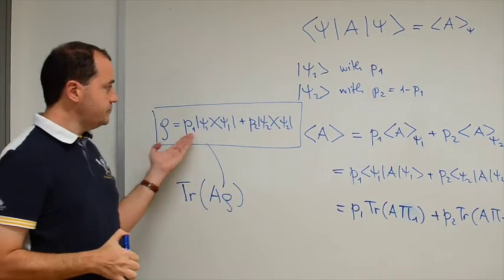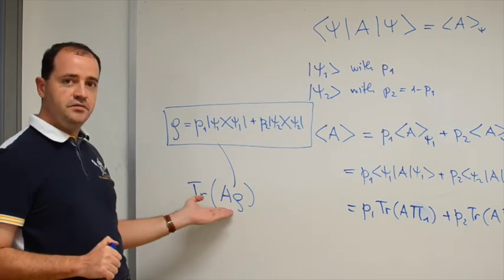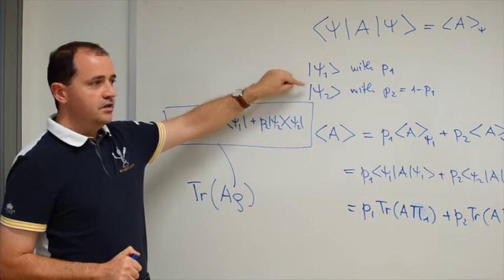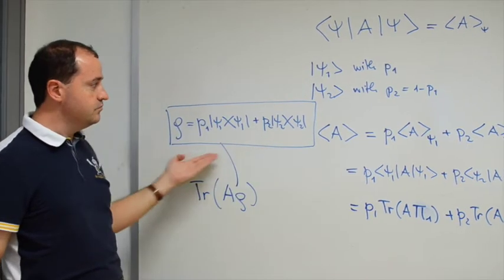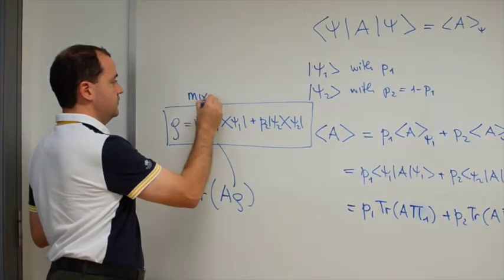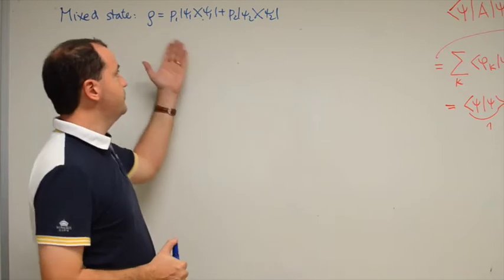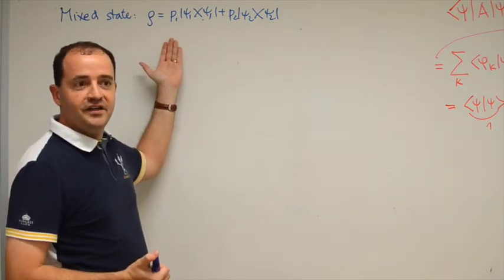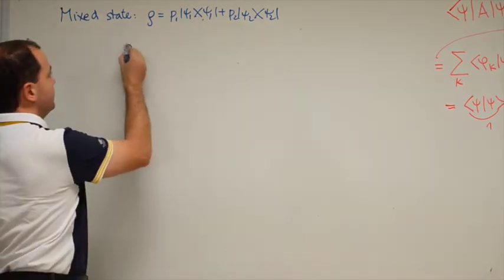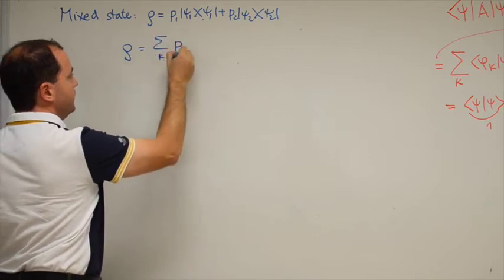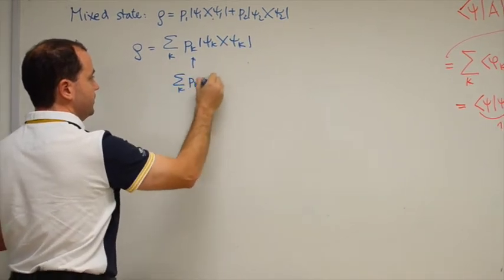This object rho is a mathematical object that describes all the statistics we can get on our system. In the case of the source it has this mixed characterization — sometimes one state, sometimes another — so this is a mixed state. It is clear how to generalize this construction if there are more than two possibilities. A generic mixed state would be written as the sum over k of P_k |psi_k><psi_k|, where the sum of all P_k equals 1 and all P_k are positive.